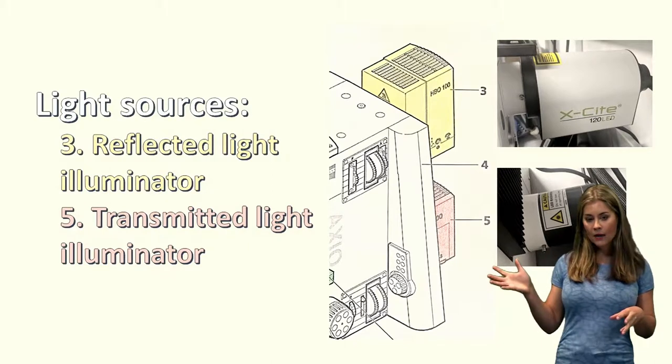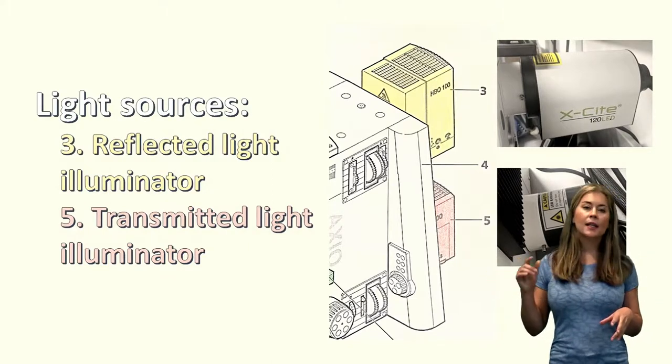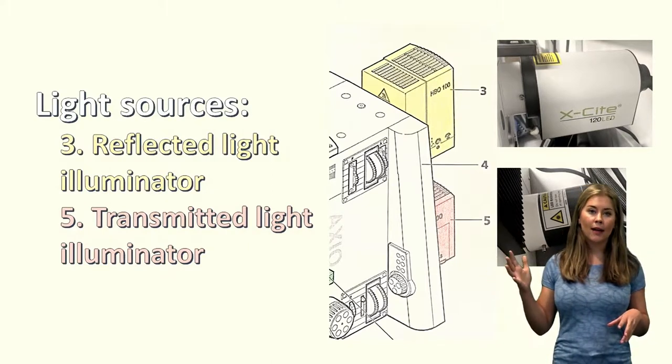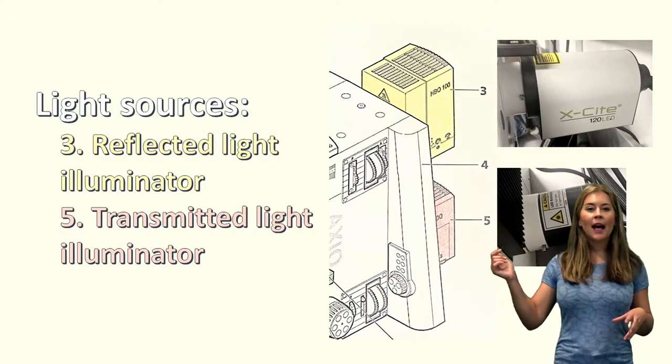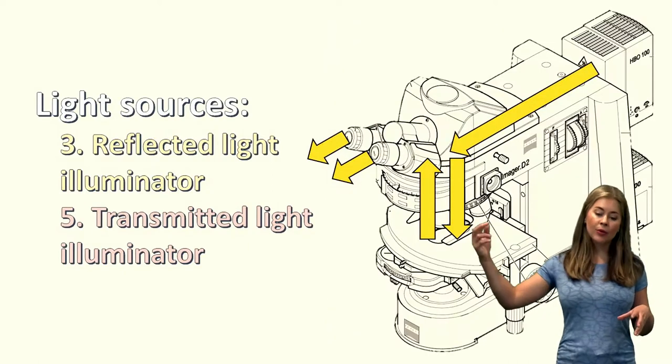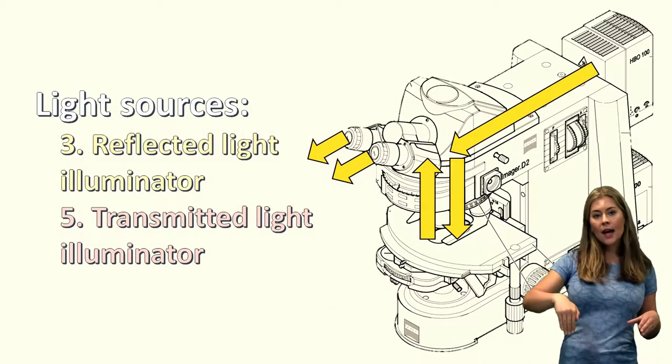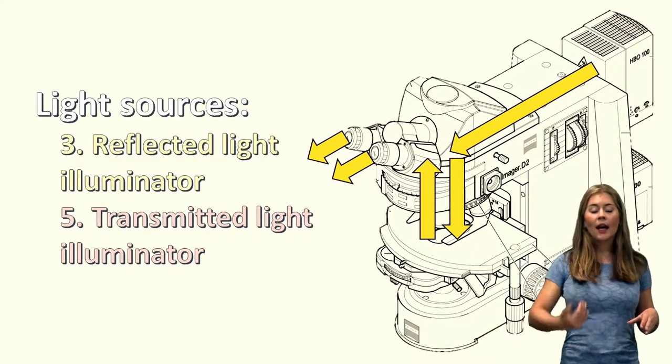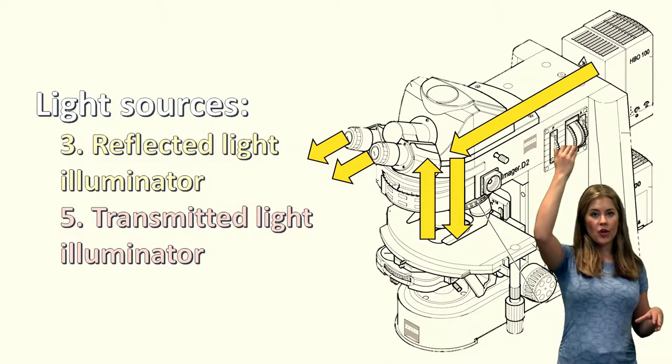So if you look at the back of the microscope number three here is the reflected light illuminator. So it's just a light, it's an LED usually. And that light will come through the microscope, go down onto your microscope's light and get reflected back up through to your eyes.